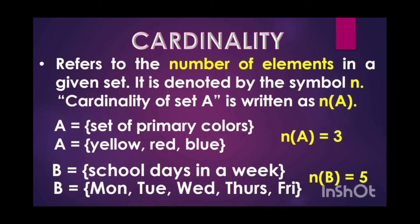In the final phase, cardinality refers to the number of elements in a given set. It is denoted by the symbol of small letter n. Cardinality of set A is written as small letter n into quantity of A.